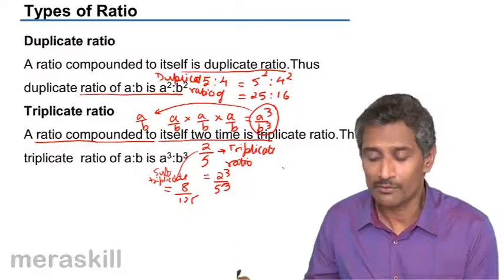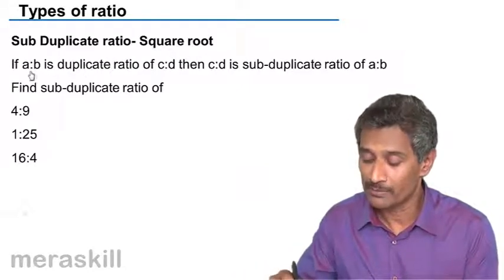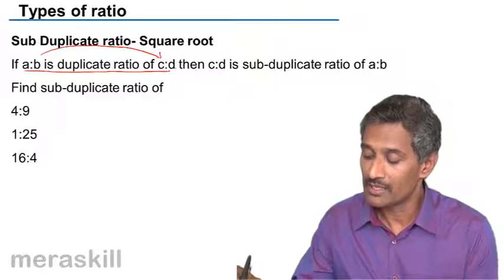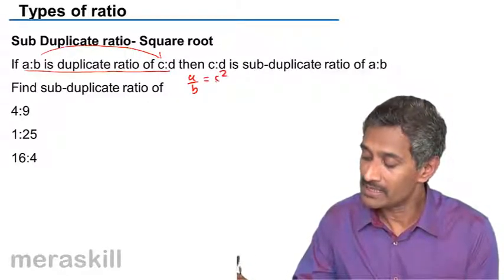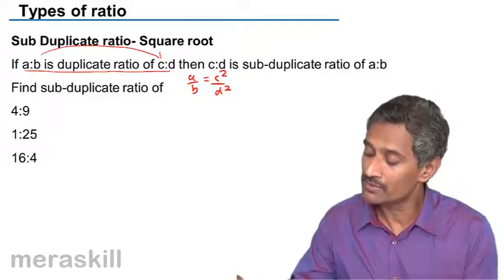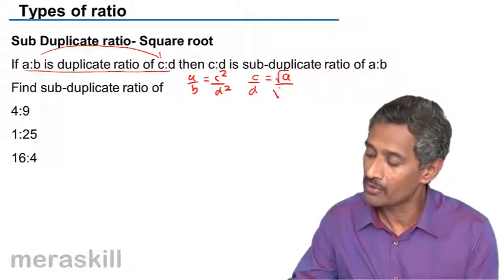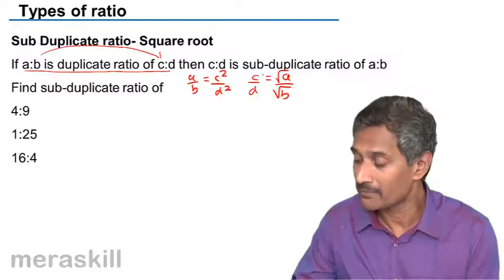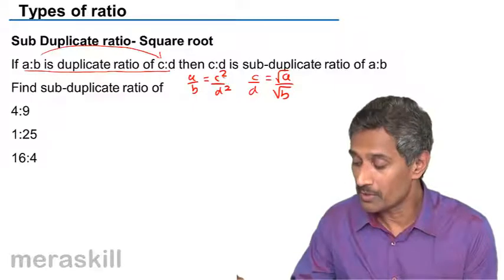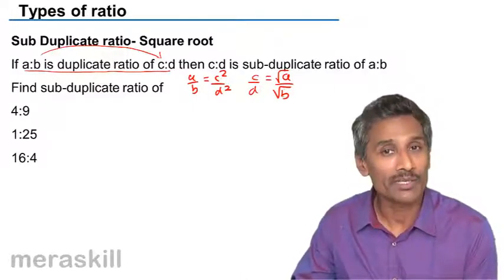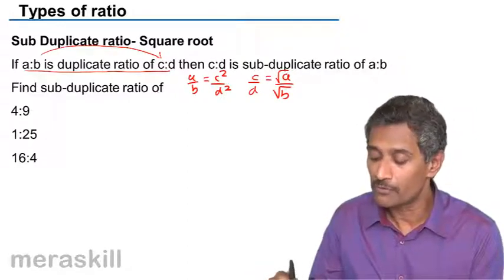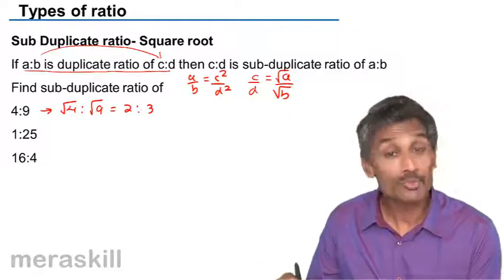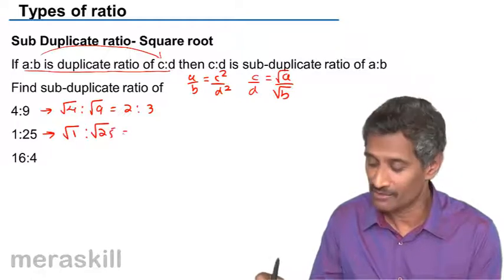We have the sub-duplicate ratio, or the square root ratio. If A is to B is the duplicate ratio of C is to D, that means A/B is C square by D square. Taking the square root, C/D is going to be root A upon root B. So C/D is the sub-duplicate ratio — when you take the square root of A/B, you get C/D. For example, the sub-duplicate ratio of 4 is to 9 is root 4 is to root 9, which is 2 is to 3. The sub-duplicate ratio of 1 is to 25 is root 1 is to root 25, which is 1 is to 5.